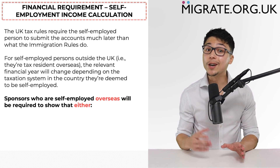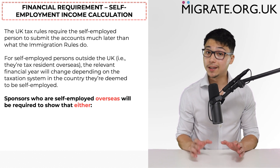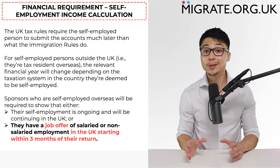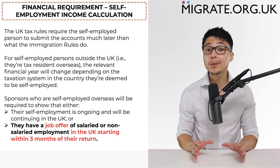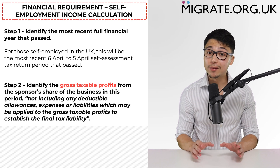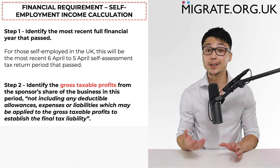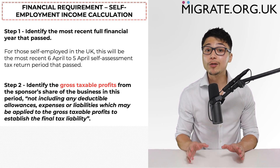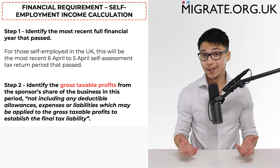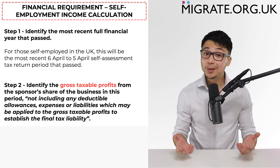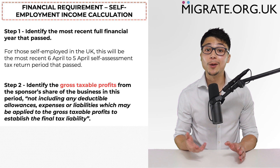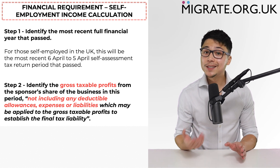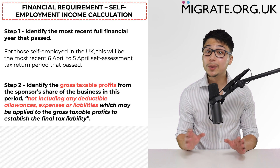Furthermore, sponsors who are self-employed overseas when the application is submitted will also be required to show that either: one, their self-employment is ongoing and will be continuing in the UK, or two, they have a job offer of salaried or non-salaried employment in the UK starting within three months of their return. The second step will be to identify the gross taxable profits from the sponsor's share of the business in the relevant financial period, not including any deductible allowances, expenses, or liabilities. This figure is not always immediately clear largely due to the Home Office's definition of gross taxable profits, so the best person to ask will be the sponsor's accountant.